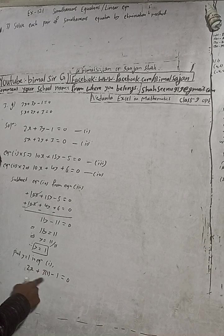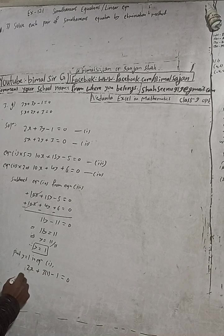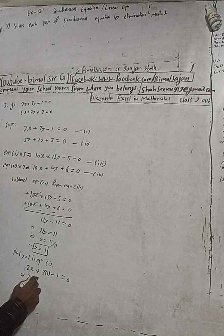Now this implies here 2x plus 3 times 1 is 3, minus 1 is equal to 0.